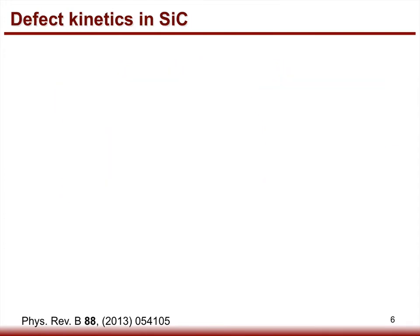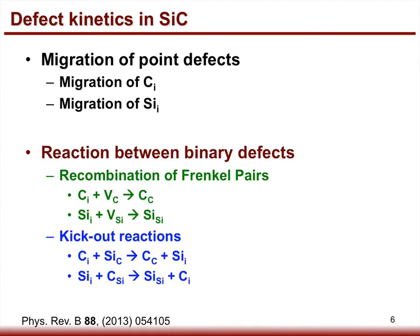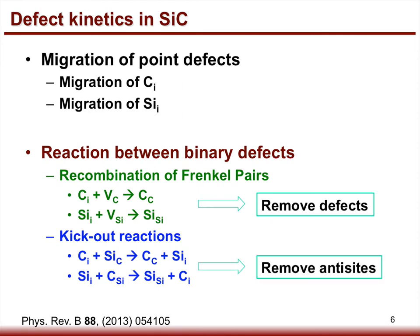The annealing mechanisms have been studied through defect kinetics in Silicon Carbide, including migration of point defects — especially migration of interstitials, which are the most mobile defects. For interactions between defects, we focus on reactions between binary defects, including recombination of two Frenkel pairs — the carbon Frenkel pair and the silicon Frenkel pair — which can remove defects, and two kick-out reactions, which can remove antisites. Both types of reactions can bring recovery to the system.